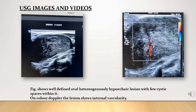Images in the slide show a well-defined oval heterogeneous hypoechoic lesion with few cystic spaces within it. On color Doppler, the lesion shows internal vascularity within it.